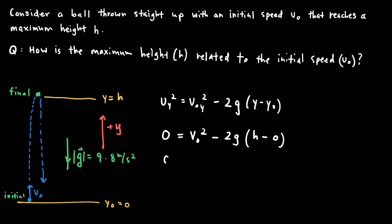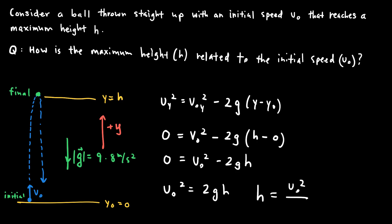This simplifies to v_naught² − 2gh = 0. Adding 2gh to both sides gives v_naught² = 2gh. Solving for the maximum height h, we get h = v_naught² / (2g). This is the simplified relationship between the maximum height h and the initial velocity v_naught.